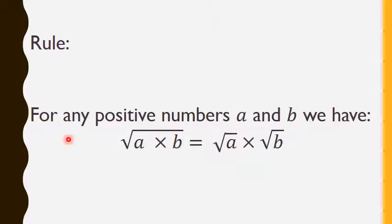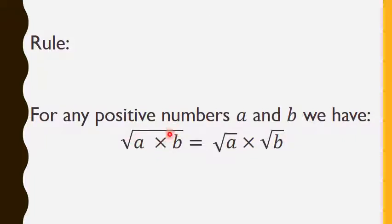The rule is: for any positive numbers A and B, we have radical A times B equals to radical A times radical B. So, the radical of the product of two numbers equals to the radical of the first number times the radical of the second number. This rule is also correct if we have more numbers, like A times B times C. So, radical A times B equals to radical A times radical B.